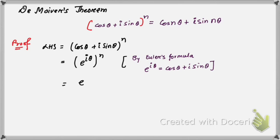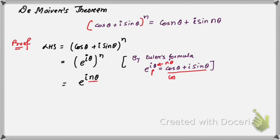We have already discussed Euler's formula in the last video. So, e to the power i theta, whole to the power n, is going to be equal to e to the power i n theta. Now, by Euler's formula, replacing theta with n theta, we get cosine n theta plus i sine n theta.